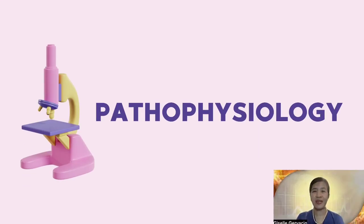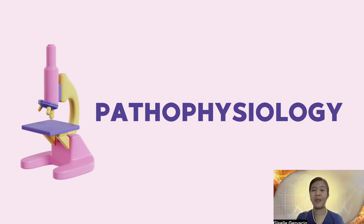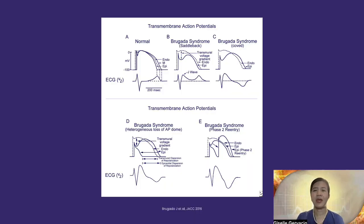Brugada syndrome is classified under channelopathies, signifying an abnormality in a cardiac ion channel, which leads to an arrhythmia — commonly ventricular fibrillation. However, only 20% of Brugada syndrome can be attributed to a single gene, the SCN5A. In the majority, the 80%, it is either from a polymorphism or sporadic, meaning negative during genetic analysis. The SCN5A gene encodes the fast sodium channel, responsible for phase zero of the depolarization phase of the action potential.